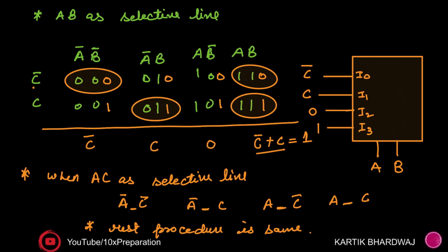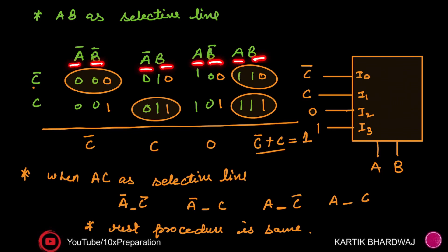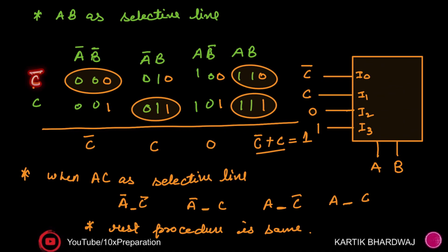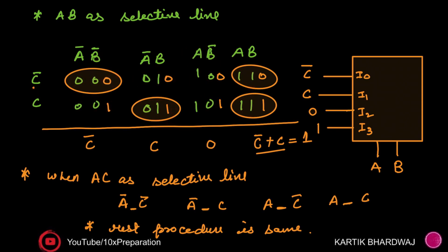Select A and B as the select input lines to reduce the MUX size. Write down all possible combinations of A and B: 00, 01, 10, 11 — corresponding to Ā·B̄, Ā·B, A·B̄, A·B. For each combination, write the possible values of the third variable C, listing C̄ and C alongside each row. Fix A and B values accordingly: 00 for the first two rows, 01 for the next two, and so on.